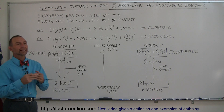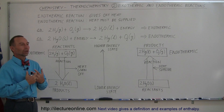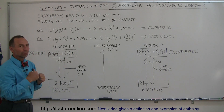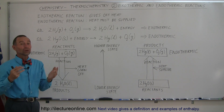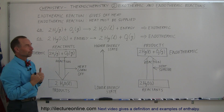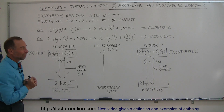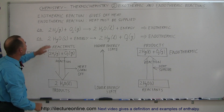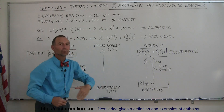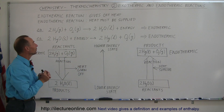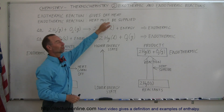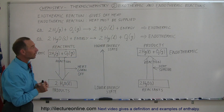An exothermic reaction is a reaction that puts heat off into the system. An endothermic reaction is a reaction that can only happen if it receives heat from outside the system. So that's the difference between the two. An exothermic reaction gives off heat, so it supplies heat to the environment. An endothermic reaction requires heat to be supplied, otherwise the reaction will not take place.